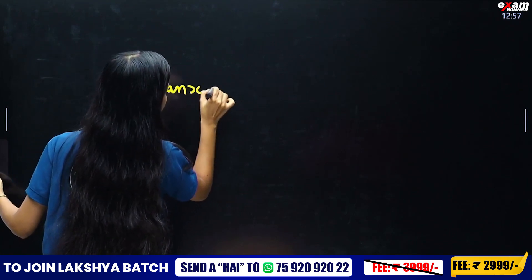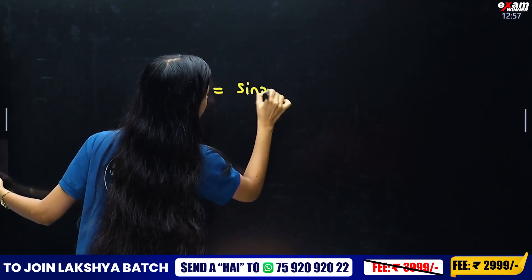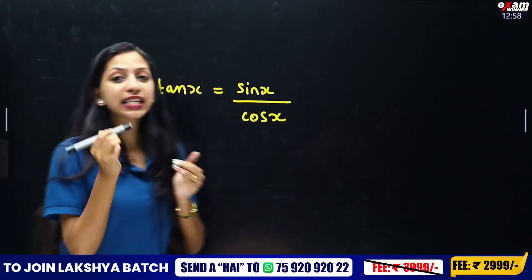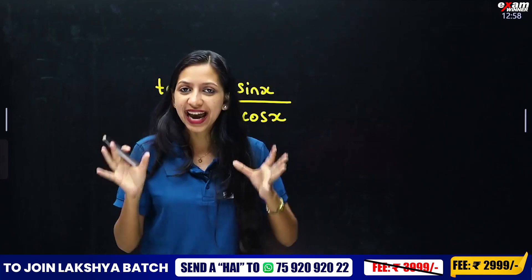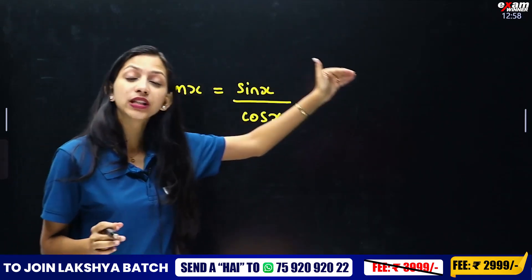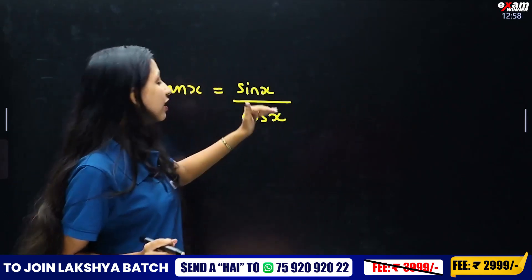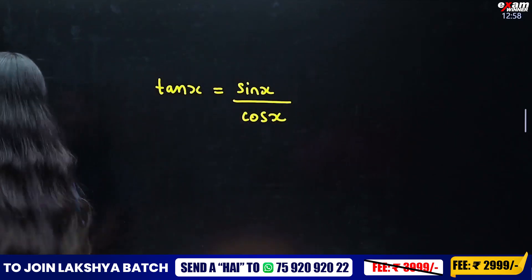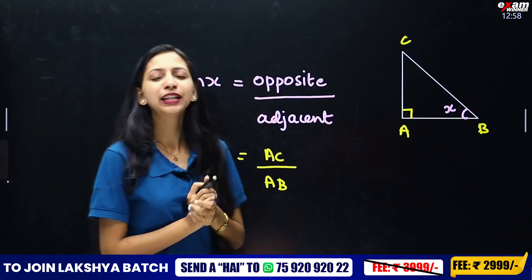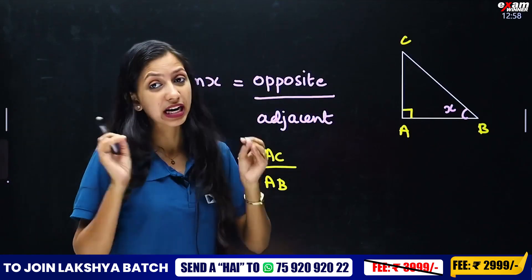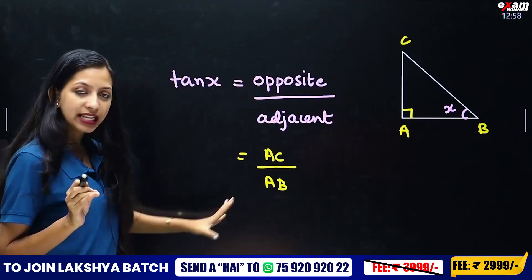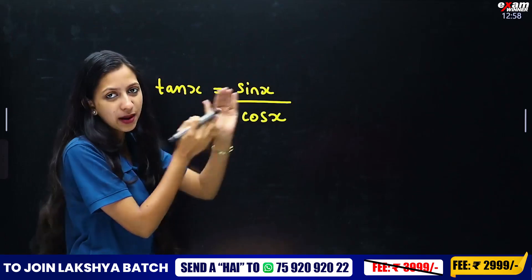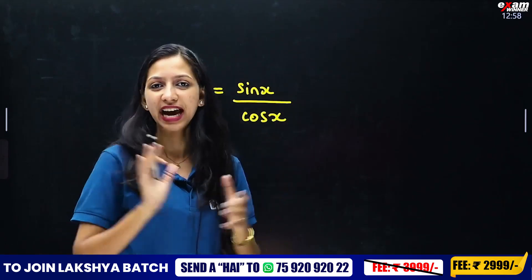We can also say tan(x) equals sin(x) divided by cos(x). Since sin(x) is opposite over hypotenuse, and cos(x) is adjacent over hypotenuse, the two hypotenuses cancel, leaving opposite divided by adjacent.